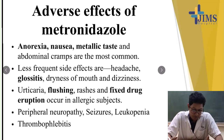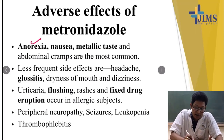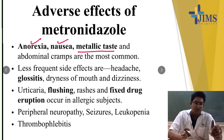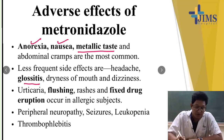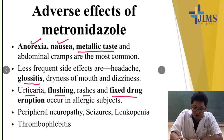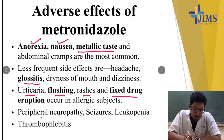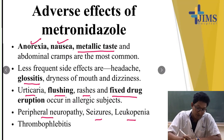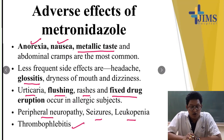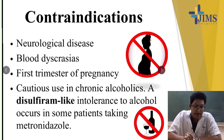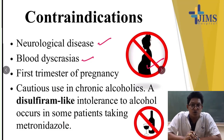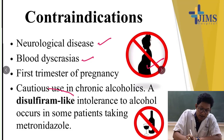Adverse effects of metronidazole: Most commonly, anorexia, nausea, metallic taste, and abdominal cramps are seen; the anorexia and nausea are largely due to the metallic taste. Less frequently, headache, glossitis, dryness of mouth, and dizziness are noted. In allergic subjects, urticaria, flushing, rashes, or fixed drug eruption may occur. Very rarely, peripheral neuropathy, seizures, and leukopenia are noted. Thrombophlebitis occurs only in patients receiving metronidazole IV. Contraindications include neurological diseases, blood dyscrasias, first trimester pregnancy, and cautious use in chronic alcoholics as it causes a disulfiram-like reaction.